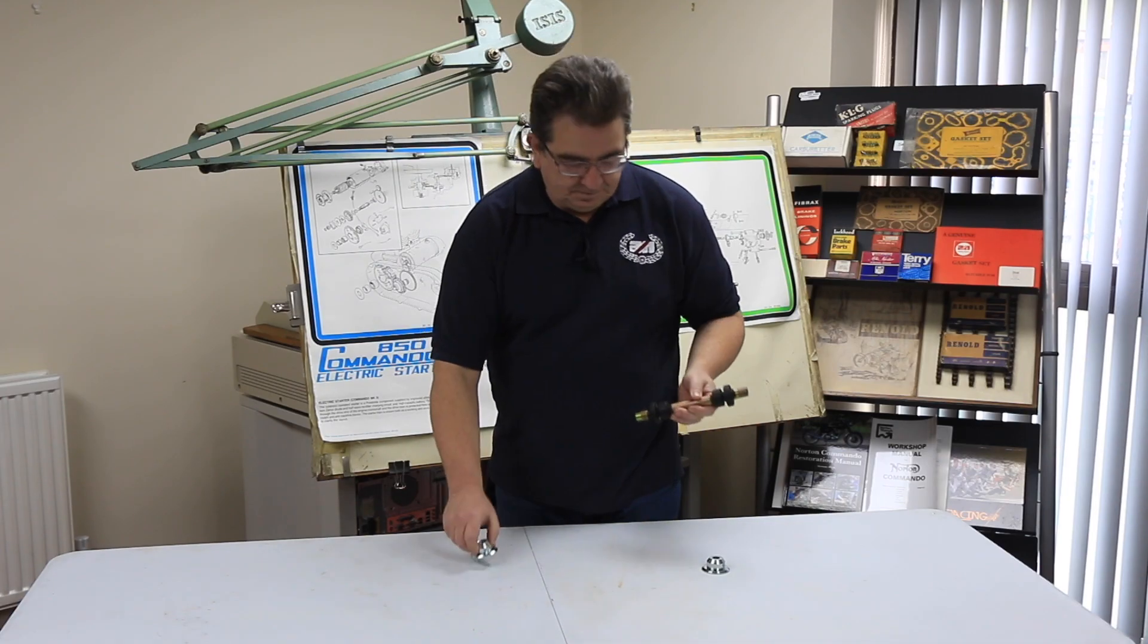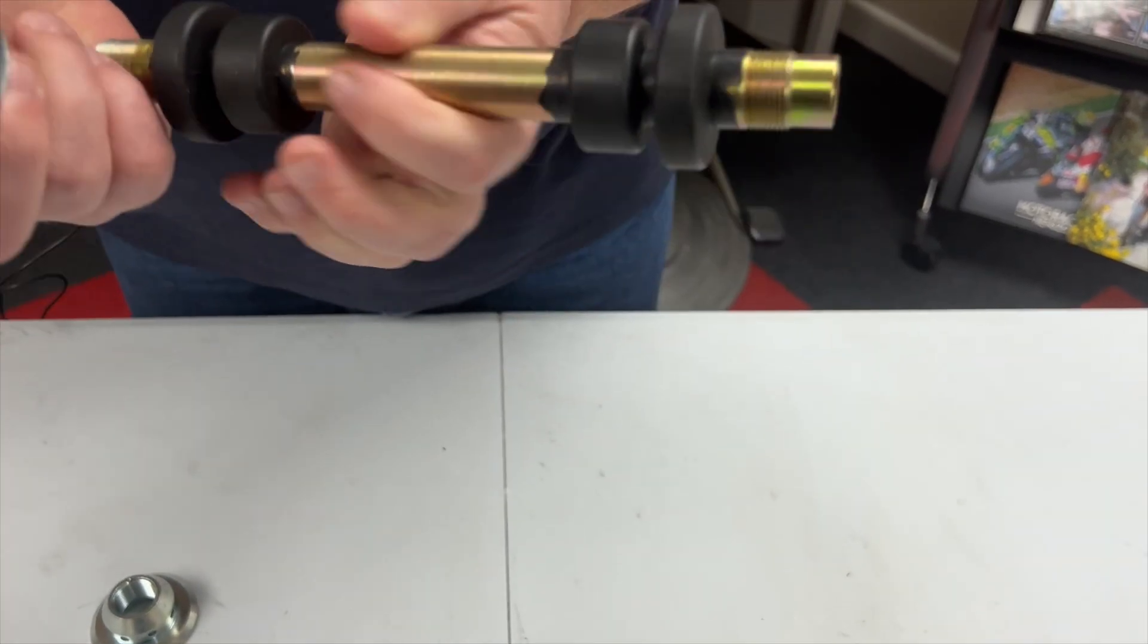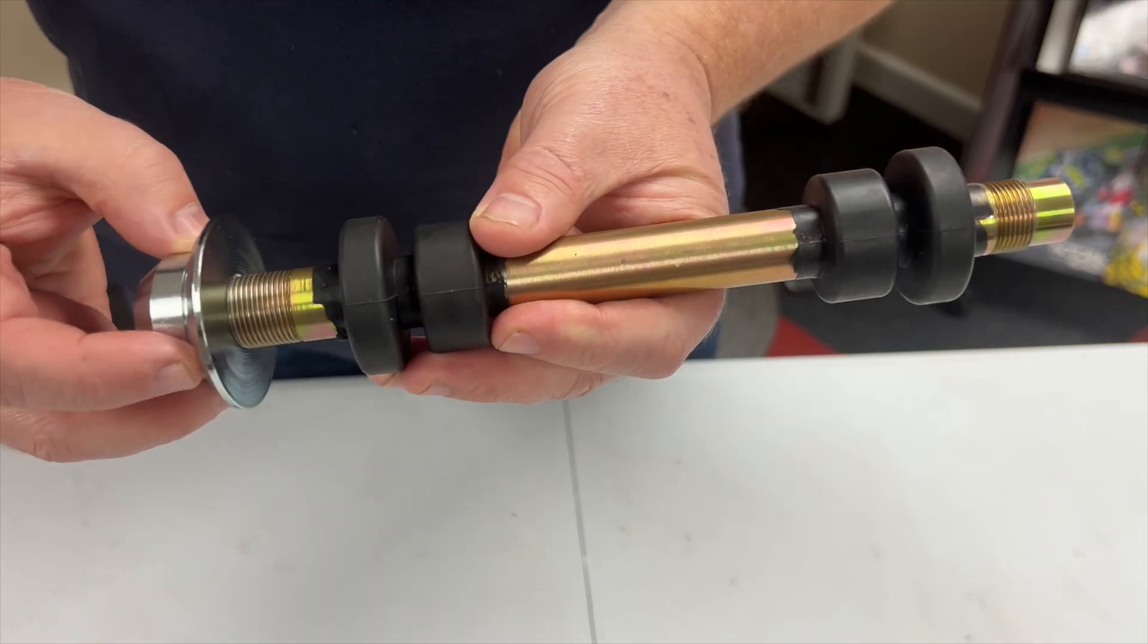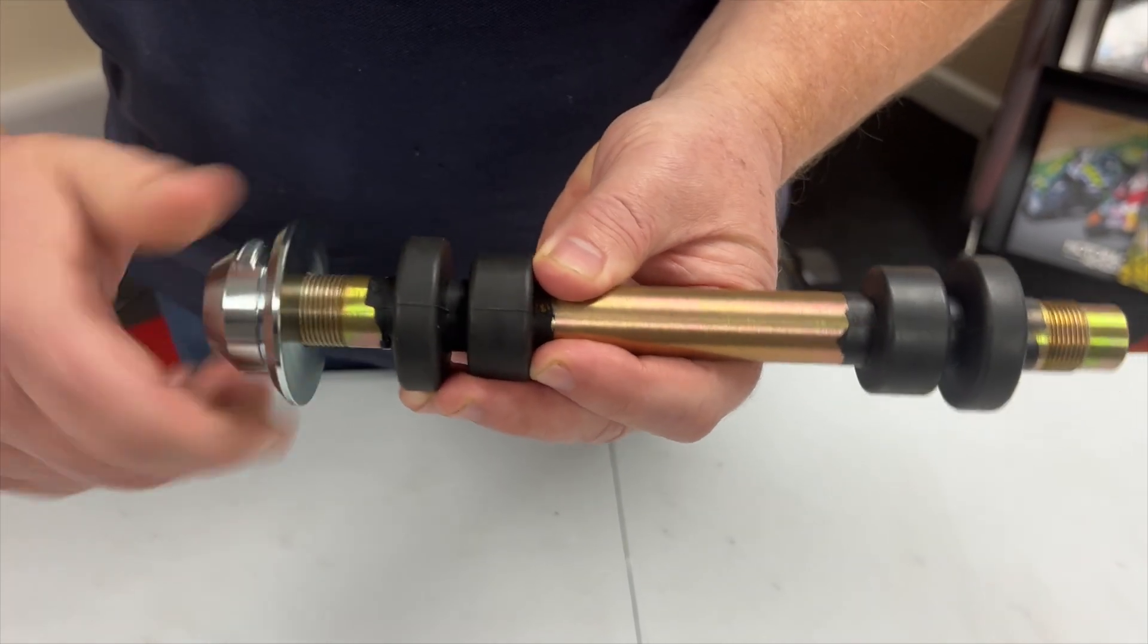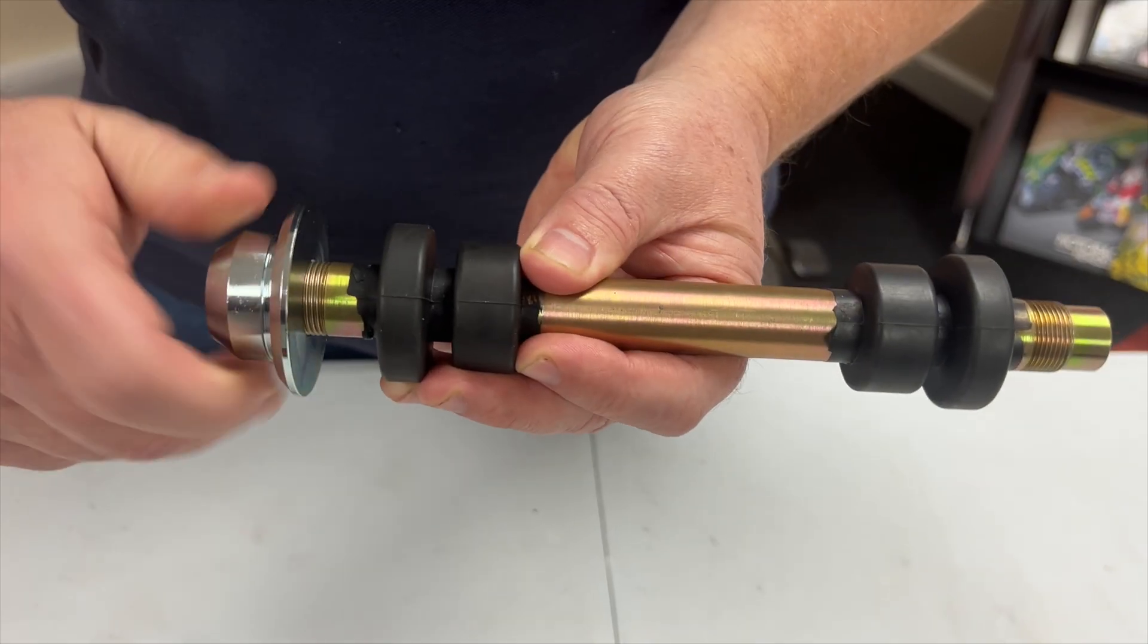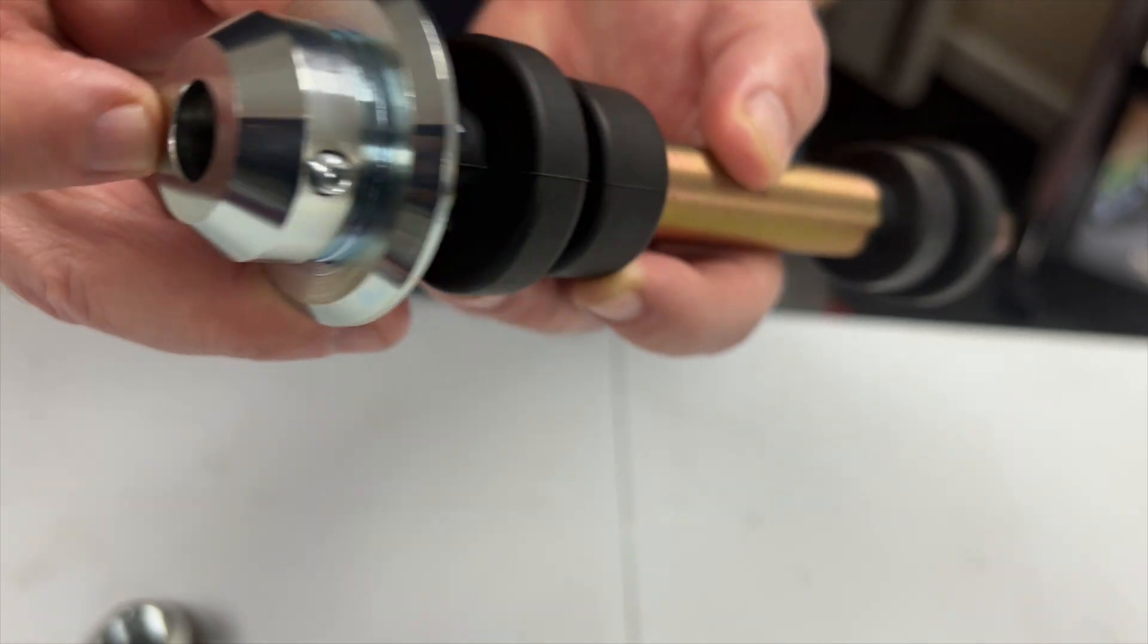So it will go on. Now the other end with the actual grub screw in, if you put that on the adjuster end, you will find that it has stopped short. You've got a big gap here that's what's stopping it going into the actual frame.